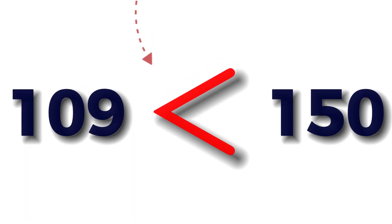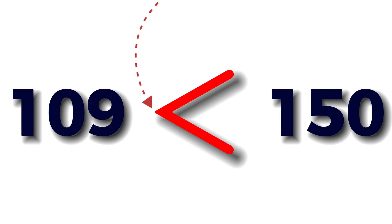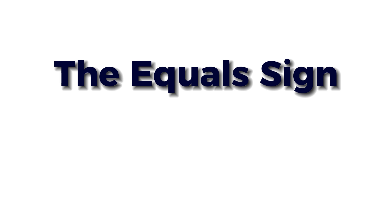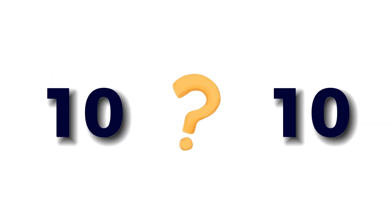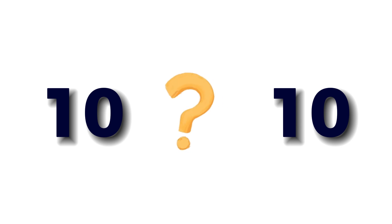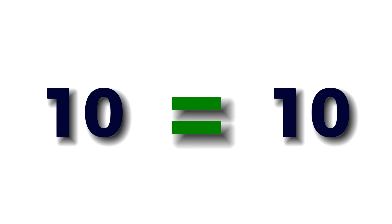Point at the smaller number. Let's work through some examples using the equal sign. If we have two numbers that are the same, like 10 and 10, how would we express that? That's right — 10 equals 10, so we use the equal sign: 10 equals 10.